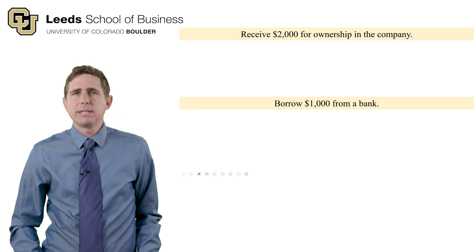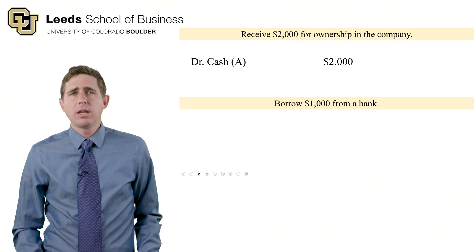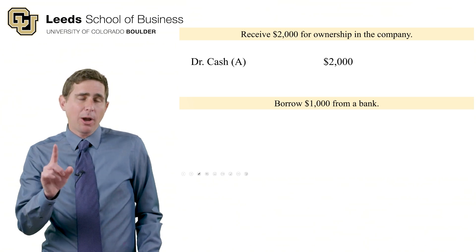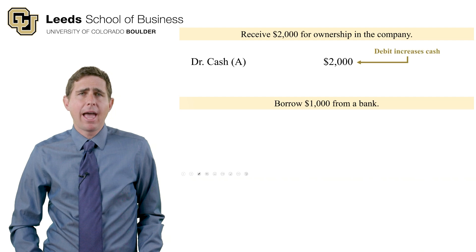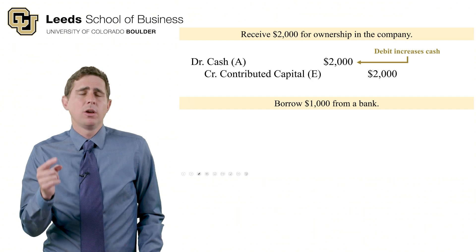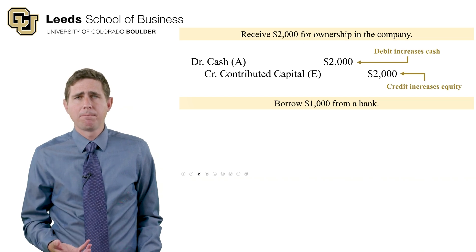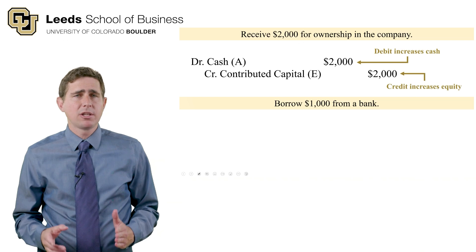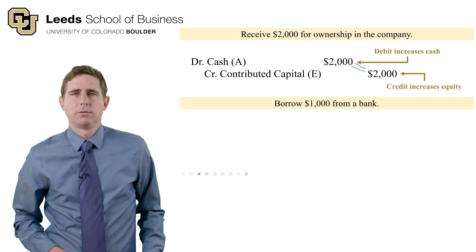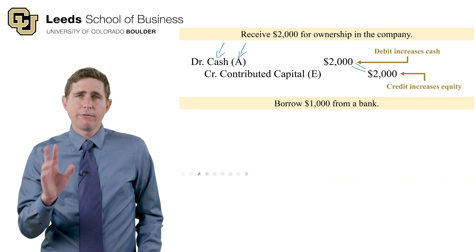Our first transaction: we received $2,000 for ownership in the company. Cash was involved — cash went up. Cash is an asset, and we increase asset accounts with a debit, so we will debit cash by $2,000. Equity is also involved; contributed capital needs to go up, and we increase equity with a credit, so we'll credit contributed capital. Debits are before credits, debits are on the left, credits are on the right, and debits equal credits.